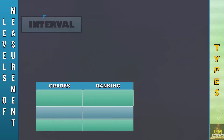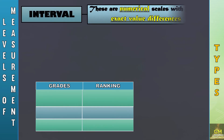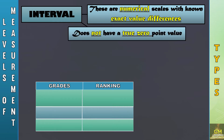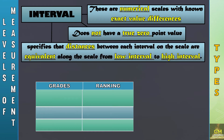Next, we have the interval level of measurement. These are numerical scales with known exact value differences. The interval level of measurement does not have a true zero point value. Also, the interval level of measurement specifies that distances between each interval on the scale are equivalent along the scale from low interval to high interval. Hence, we have the term exact value differences.